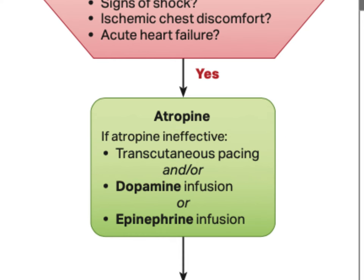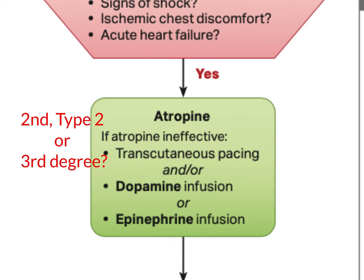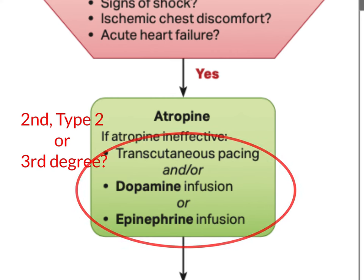If your patient is in a 2nd degree type 2 or a 3rd degree heart block, atropine is much less likely to be effective. So if your patient is significantly unstable, it is reasonable to either go straight to pacing initially, or to switch to pacing after only 1 or 2 doses of atropine rather than giving the maximum amount, which takes about 10 minutes or more to deliver.